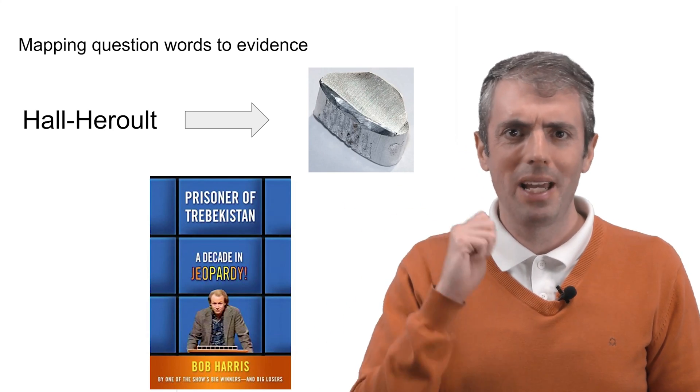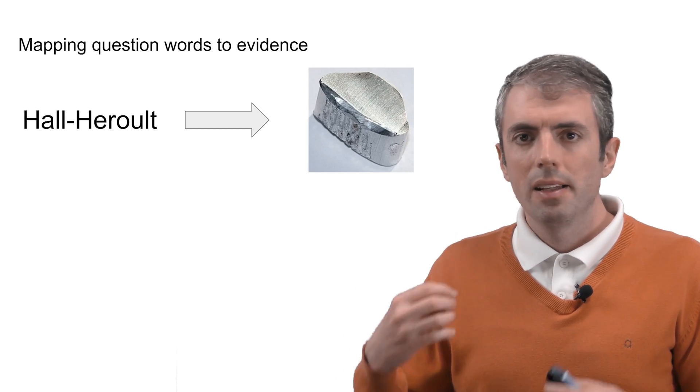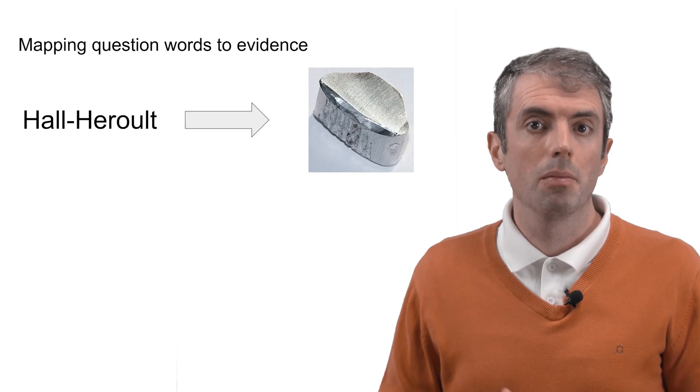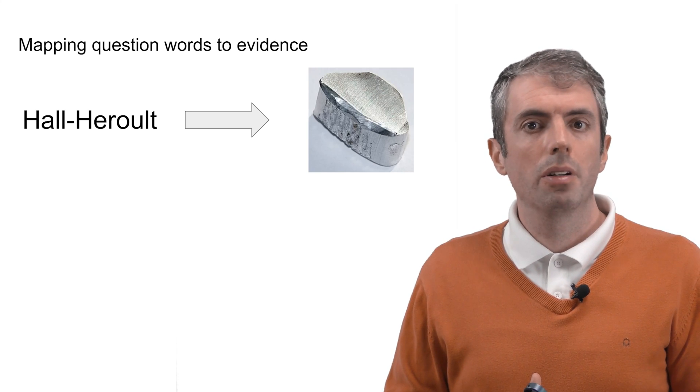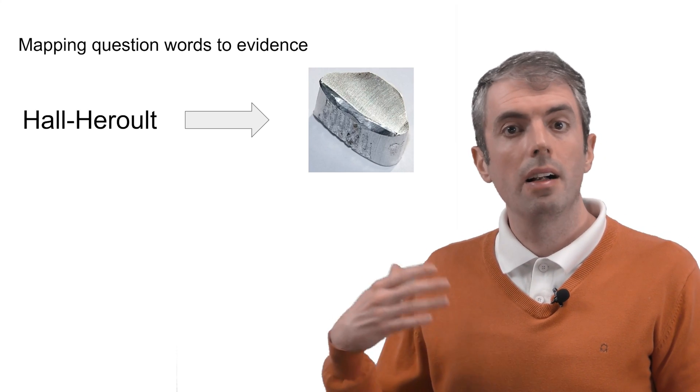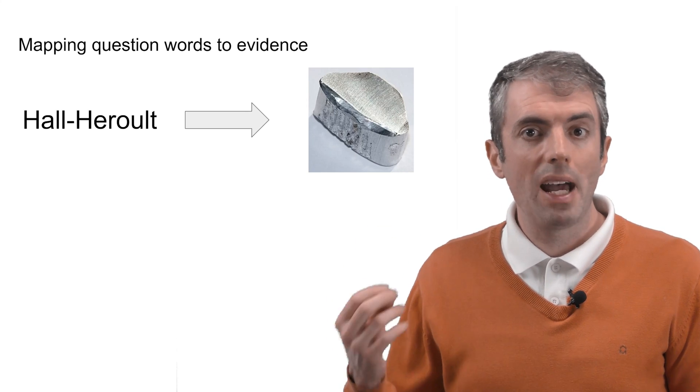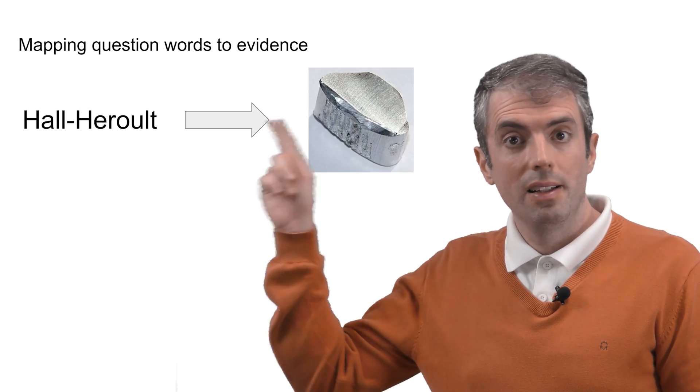This is a term popularized by Bob Harris in his book, The Prisoner of Trebekistan. Sometimes TF-IDF is good at finding these sorts of terms. If you have a good TF-IDF clue in a question like, what do you need the HAL HERO process for? It's fairly easy to map that query term to aluminum.